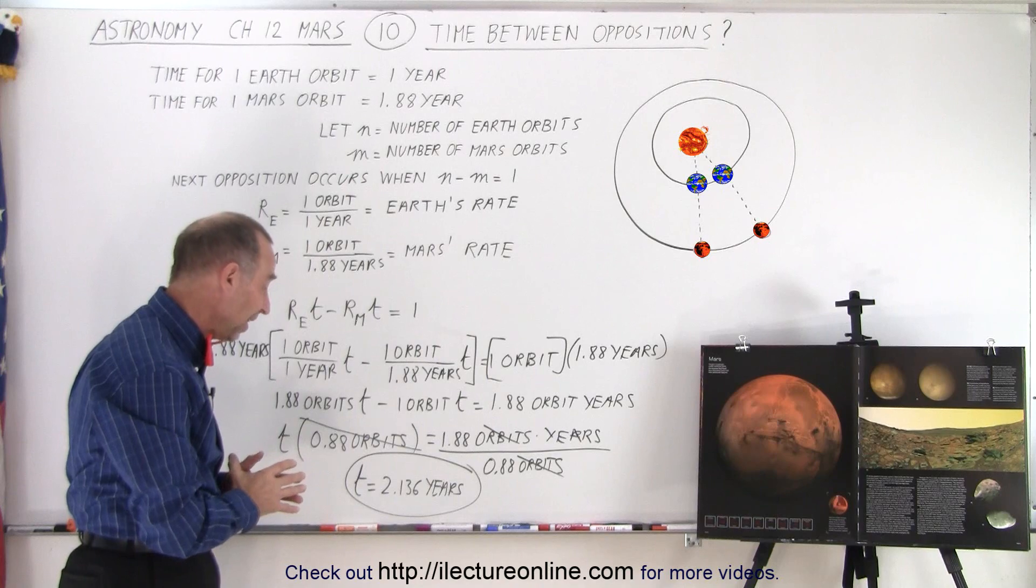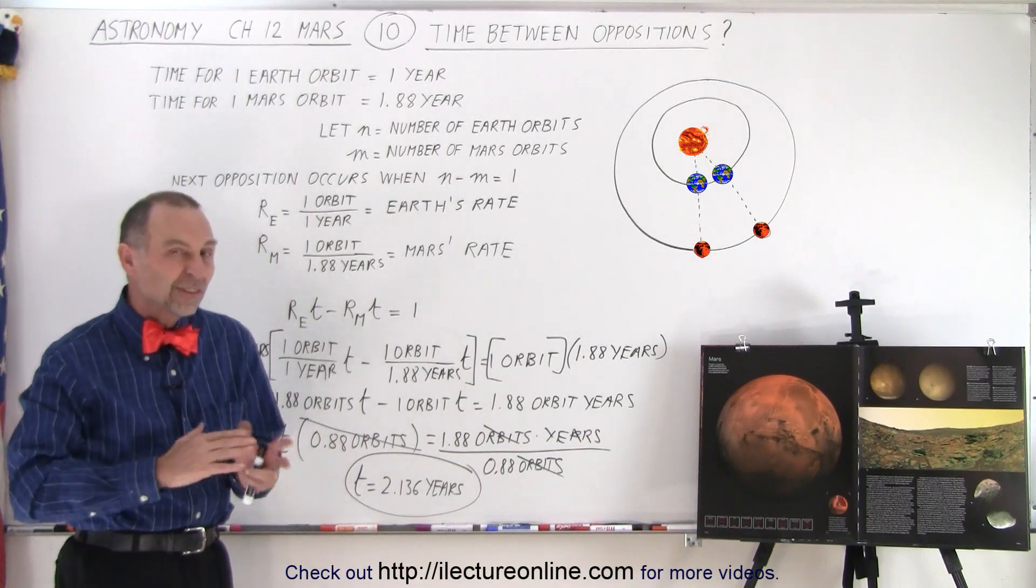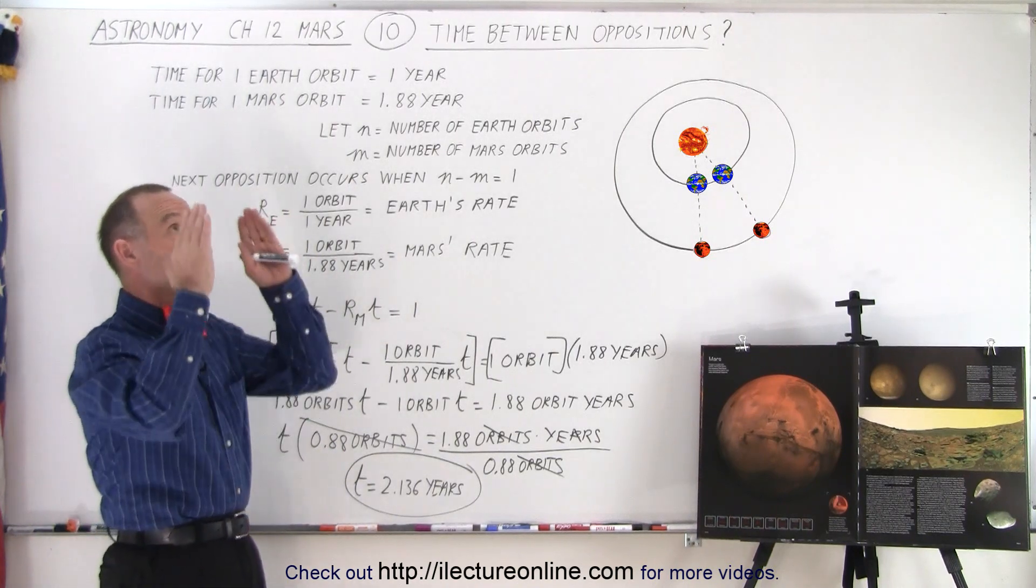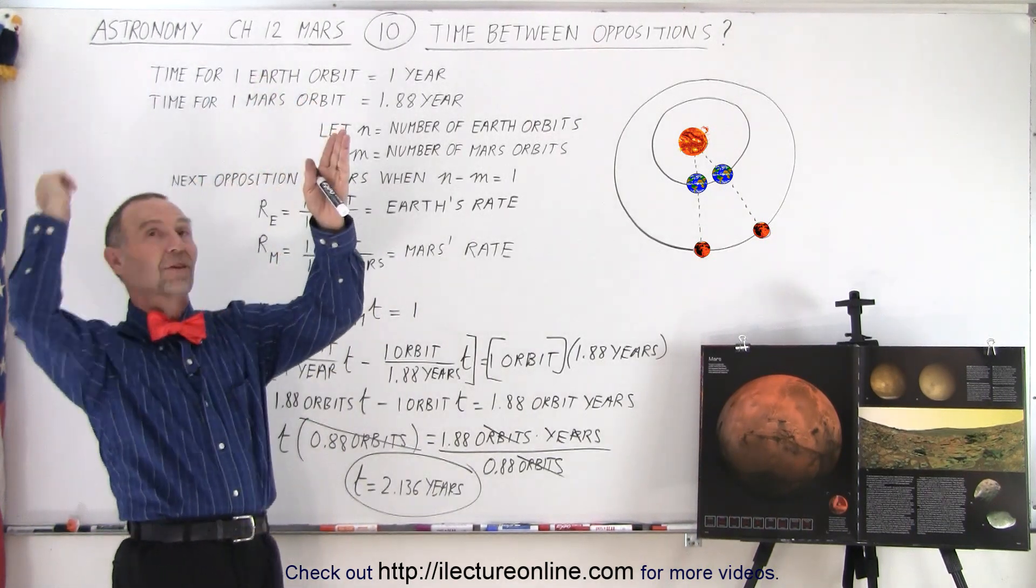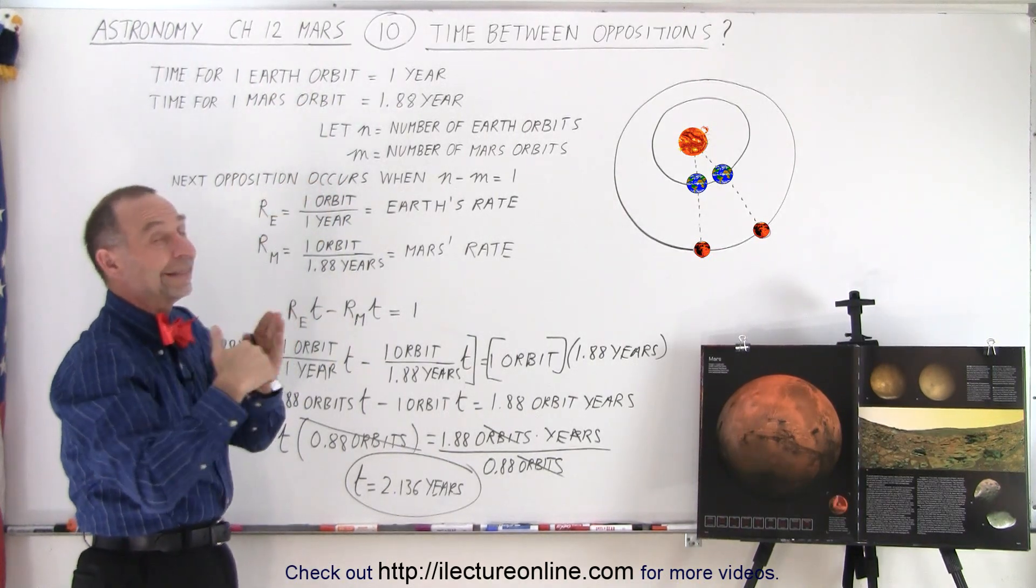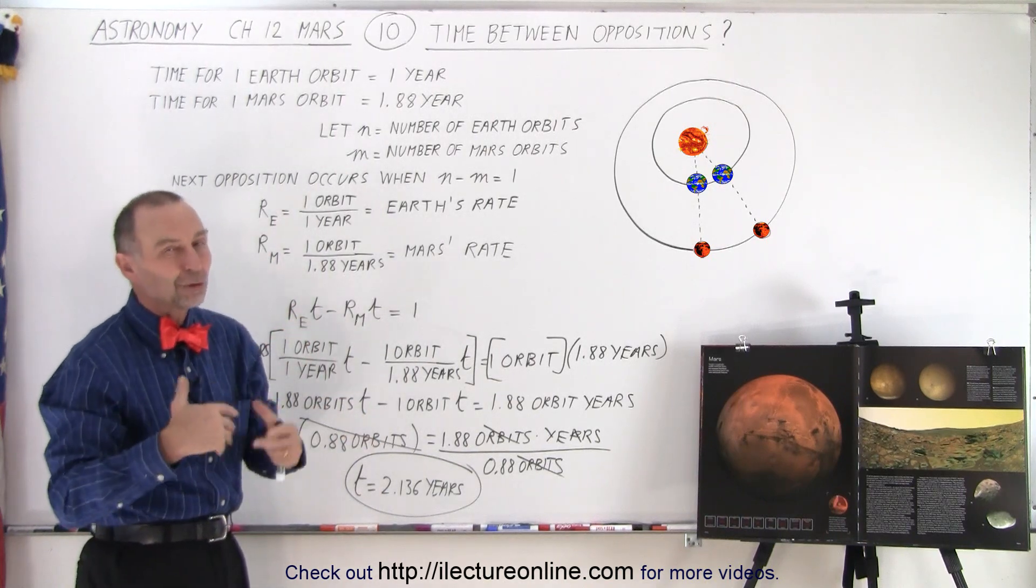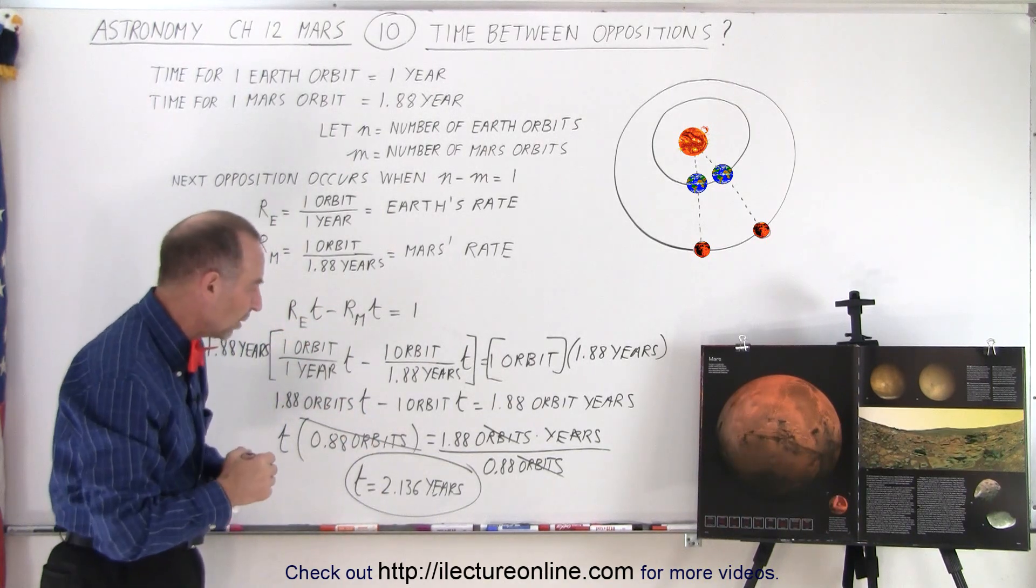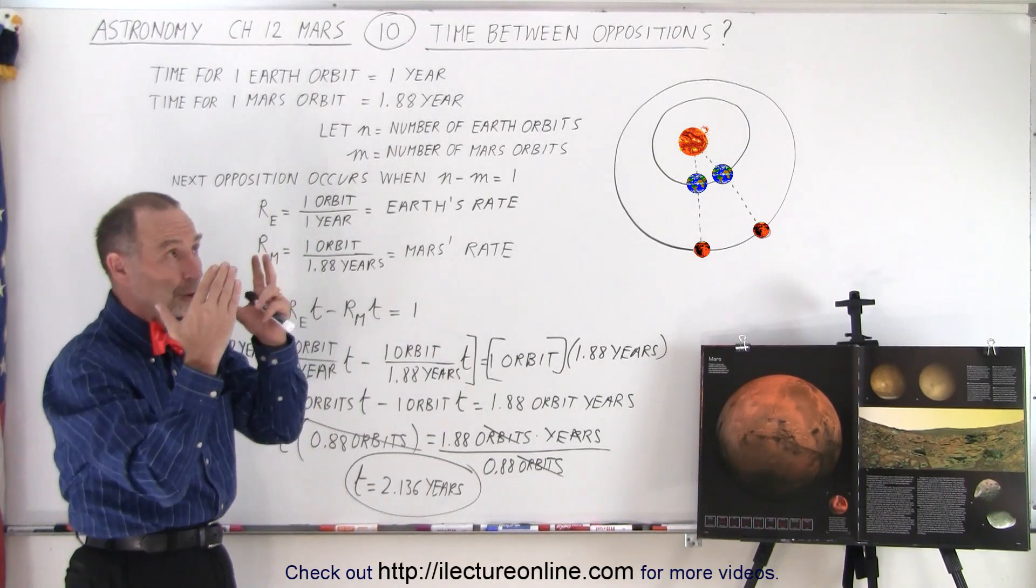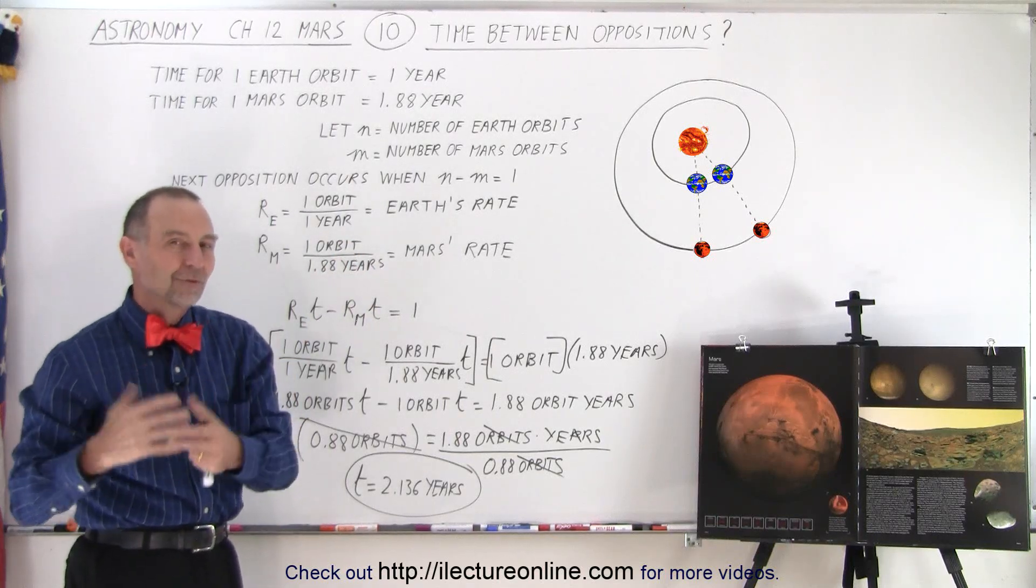So we can probably say that it's somewhere between two years and one month and two years and two months between oppositions. So when you see Mars directly across from us and the Sun being directly behind us so that we're lined up perfectly where Mars is at opposition, the next time the same event will occur will be a little bit more than two years. Then Mars will be the closer to us relative to where we are in the orbit and we get the best view on Mars.